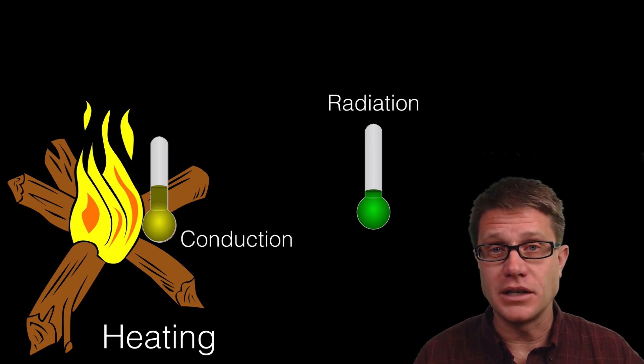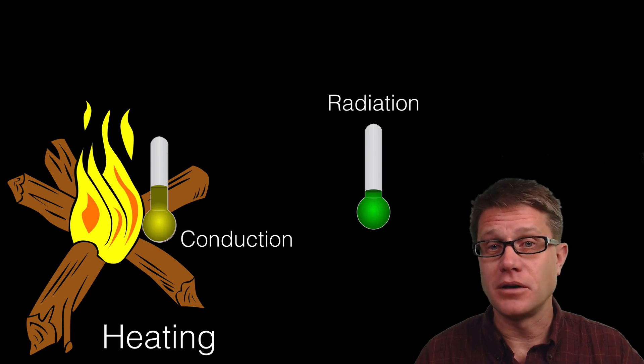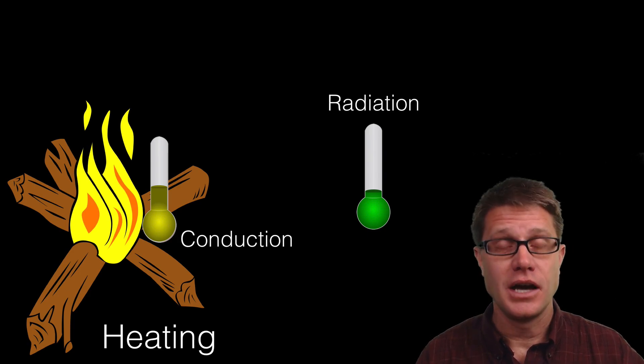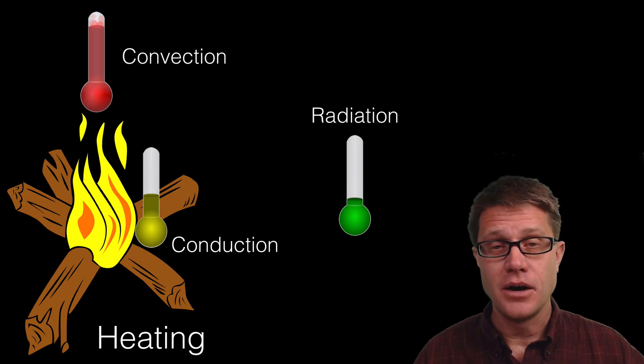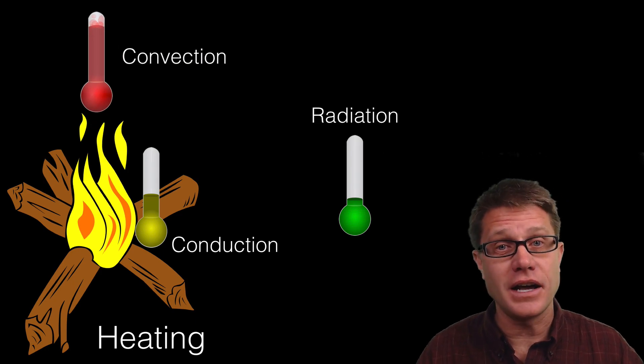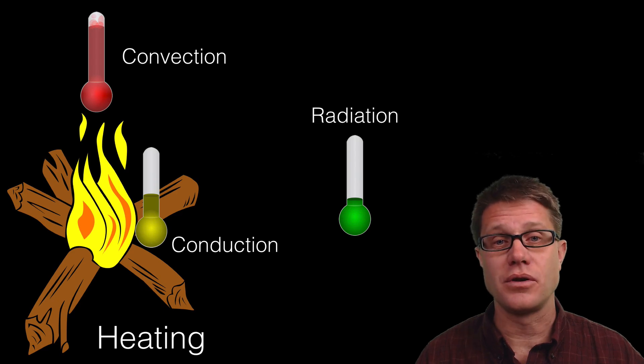Those molecules are running into the molecules of the thermometer. It is heating it up. Now we have radiation plus conduction. And if we were to move that thermometer above the fire, now we have convection going on. We are heating up all that air and that hot air is transferred right directly to the thermometer. So that is going to be the hottest.